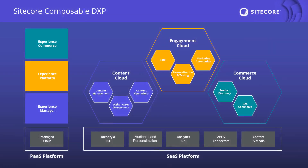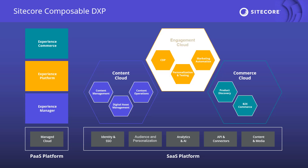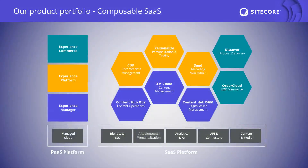As a quick recap, these are the main clouds inside Sitecore Composable Digital Experience Platform: content, commerce, and customer engagement. Customer Engagement Cloud is where Sitecore CDP and Personalize live. These products are composable, meaning they are API-first, ready to integrate with each other and with other marketing applications.